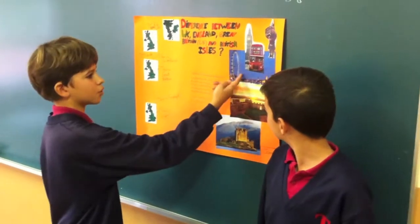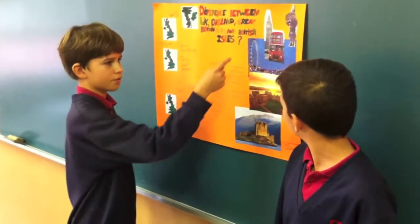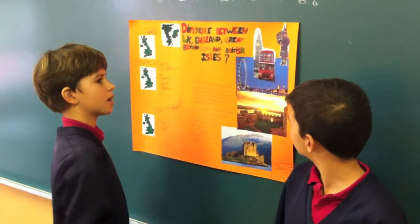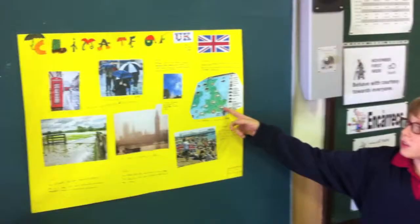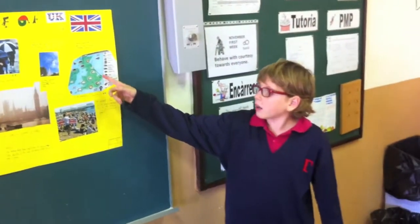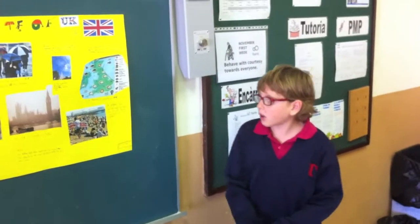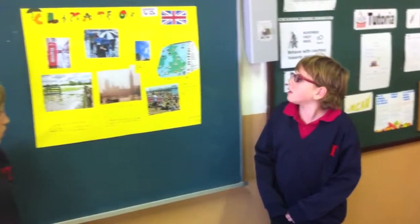As you can see, this photograph is of London and this photograph is of Big Ben. This photo represents the climate of a normal day in spring in the UK.